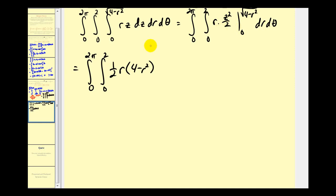When Z is zero, we'll have zero. Let's distribute here. We're going to have two R minus one half R cubed.